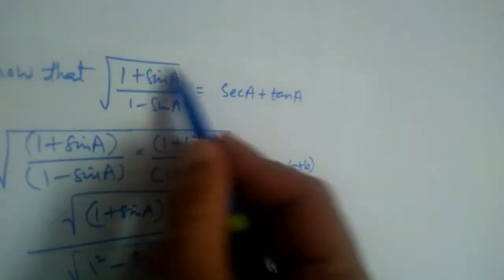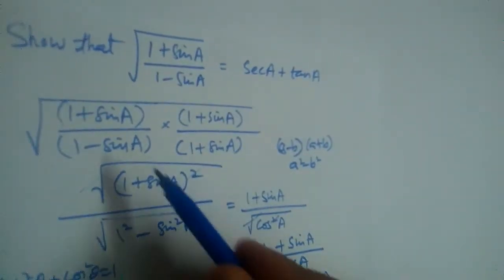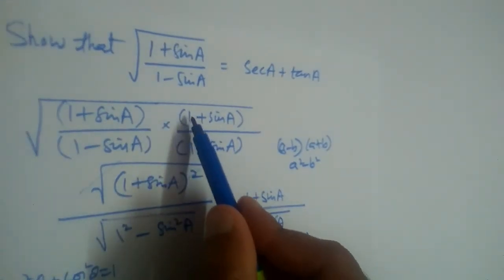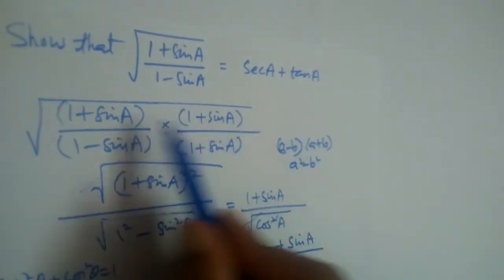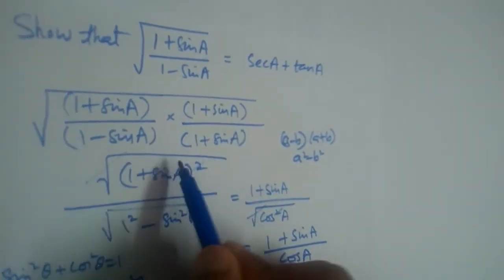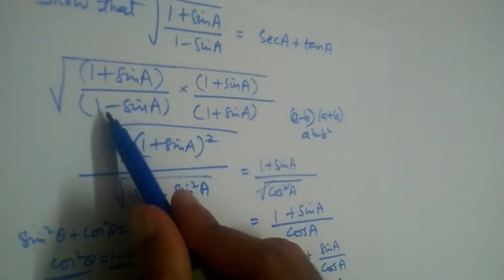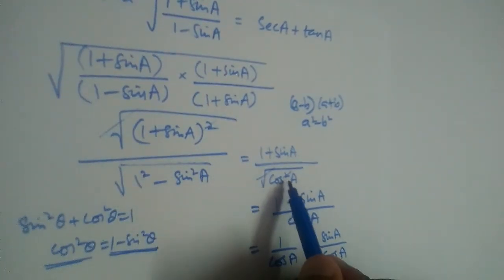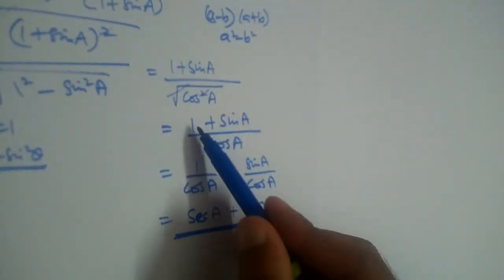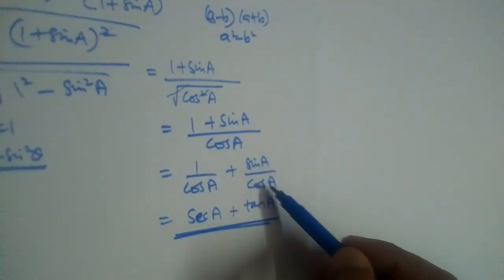So √((1 + sinA)/(1 - sinA)) equals secant plus tan. What we did: we rationalized by multiplying numerator and denominator by (1 + sinA). The numerator became (1 + sinA)² so the root and square cancelled. In the denominator, using (a - b)(a + b), we got 1 - sin²A = cos²A, so root and square cancelled, giving (1 + sinA)/cosA. Writing separately: 1/cosA is secant, sinA/cosA is tan.